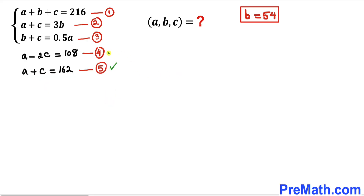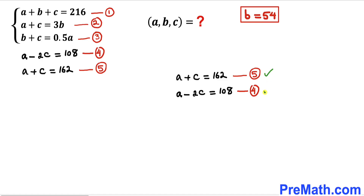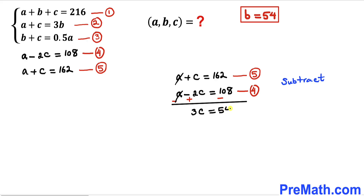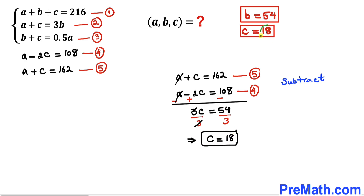Let's focus on equations five and four. We are going to subtract equation four from equation five. Changing the signs — positive becomes negative, negative becomes positive, positive becomes negative — the a terms cancel. So c plus 2c gives us 3 times c equals 54. Dividing both sides by 3, our c value turns out to be 18.